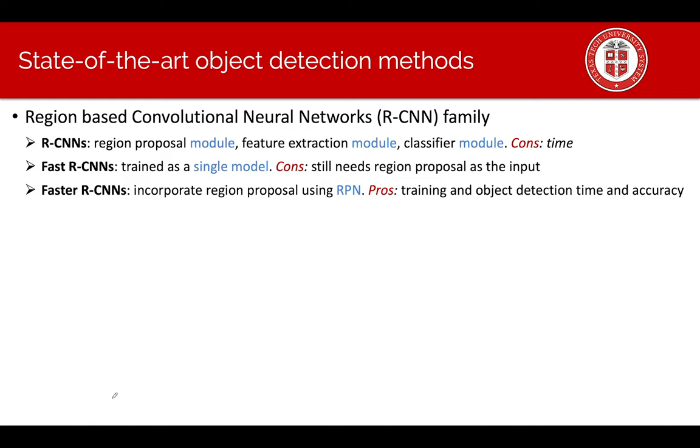Faster R-CNN incorporates region proposers using RPN or region proposer network, and it improves the training as well as object detection time and accuracy. Next is You Only Look Once or YOLO family.